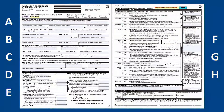Properly filling out the MV1 Wisconsin Title and License Plate application is important to receive a Wisconsin Title and License Plates in your name. The MV1 is split into eight sections. Click the link in the description box below for other videos in this series.